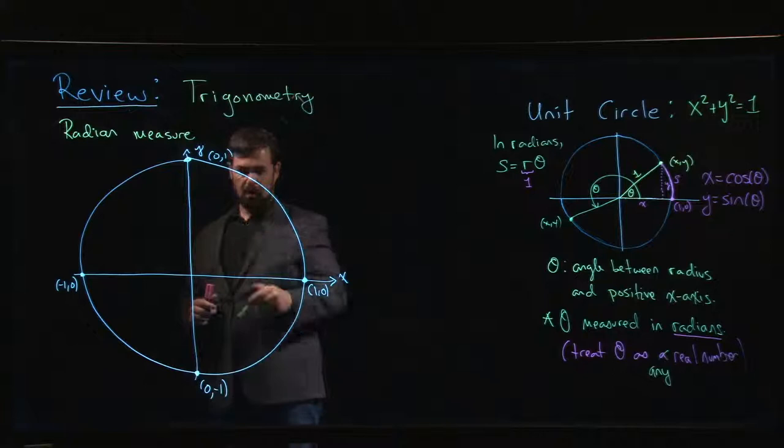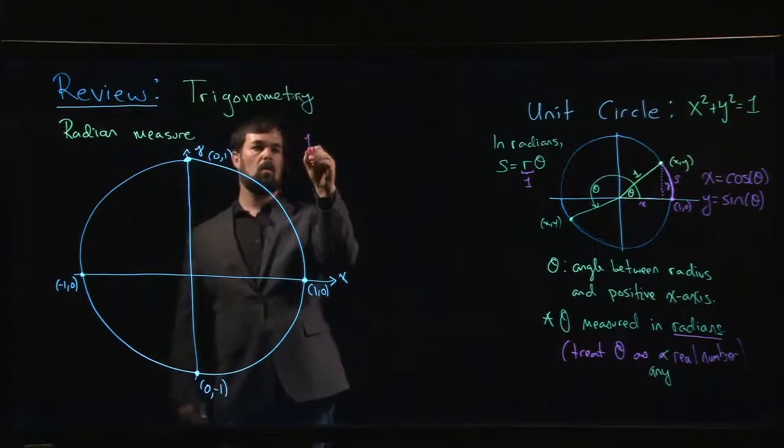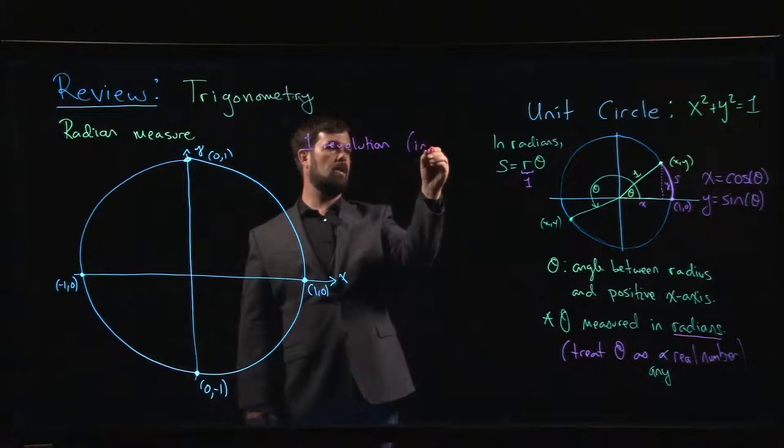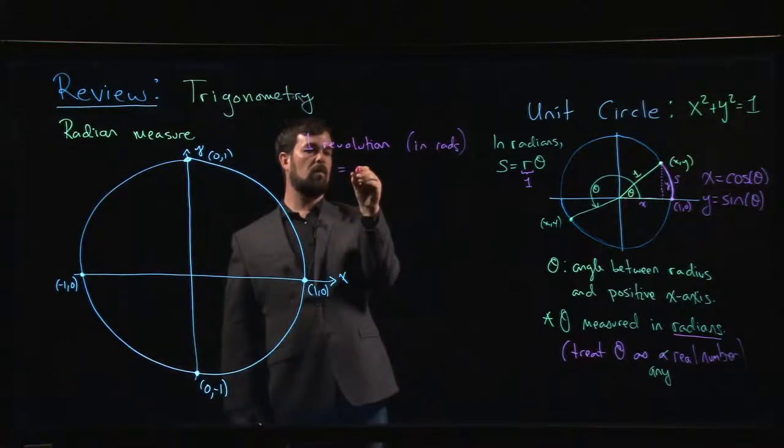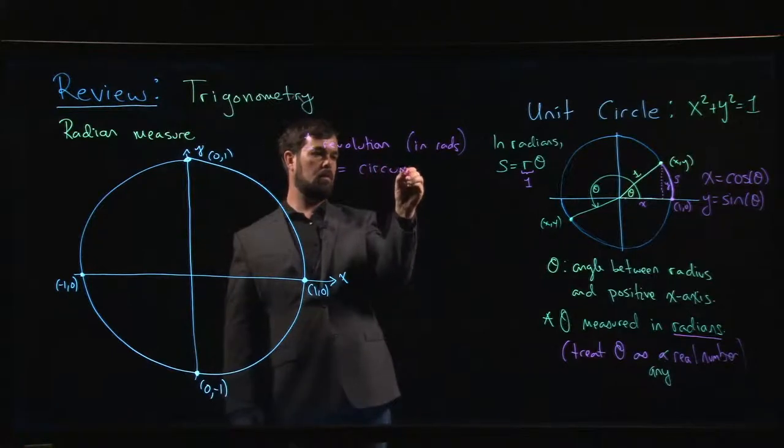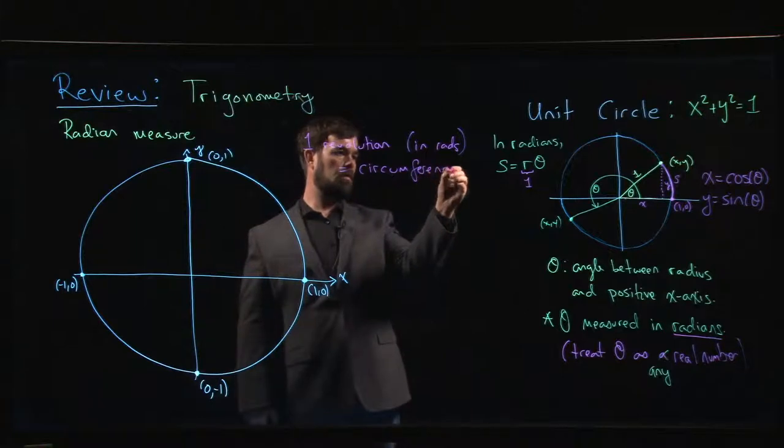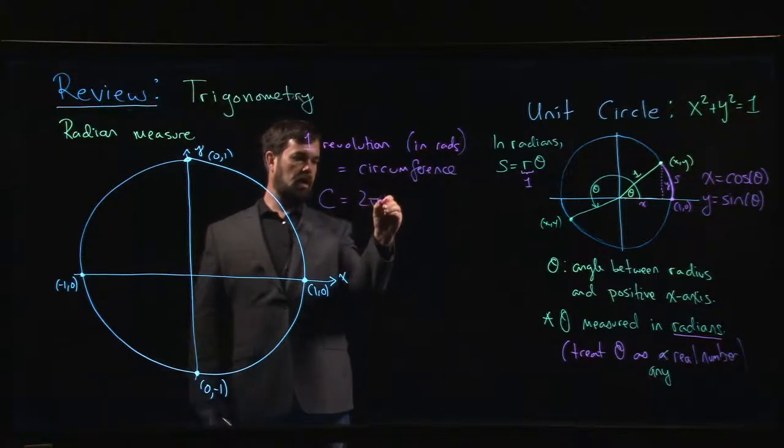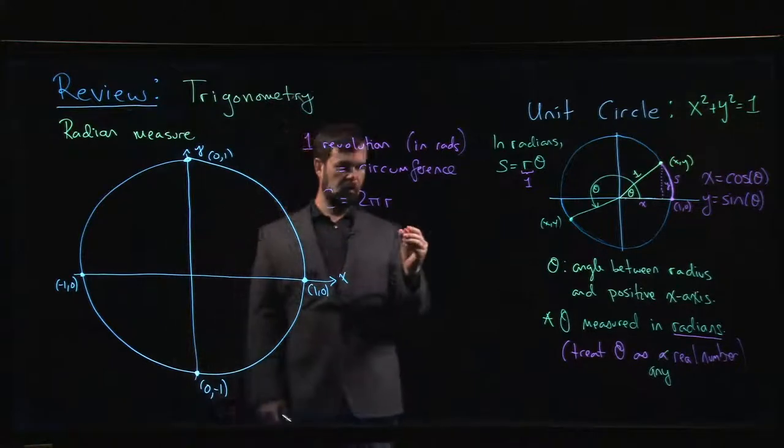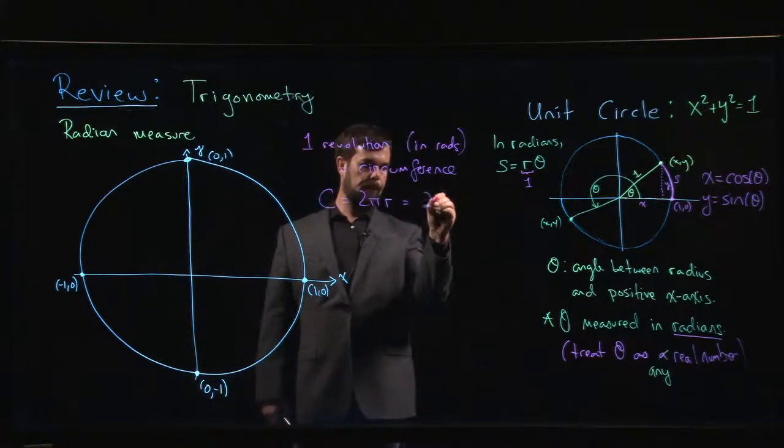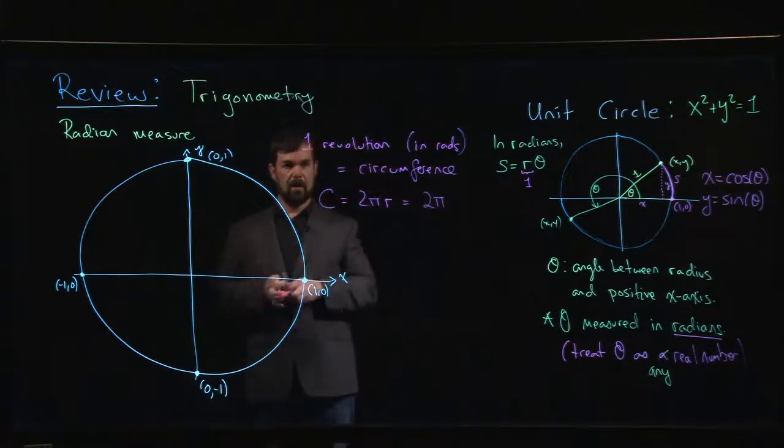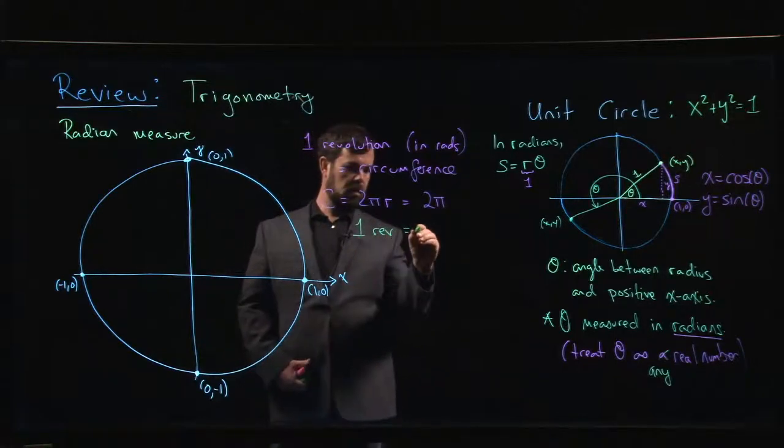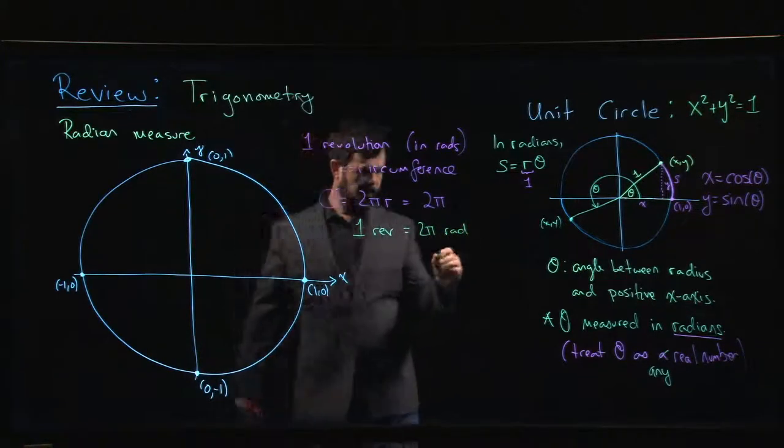So that means that one revolution in radians is equal to the circumference. And we know the circumference is given by 2π times the radius, and our radius is 1, so this circumference is 2π. So that means that one revolution is 2π radians, which